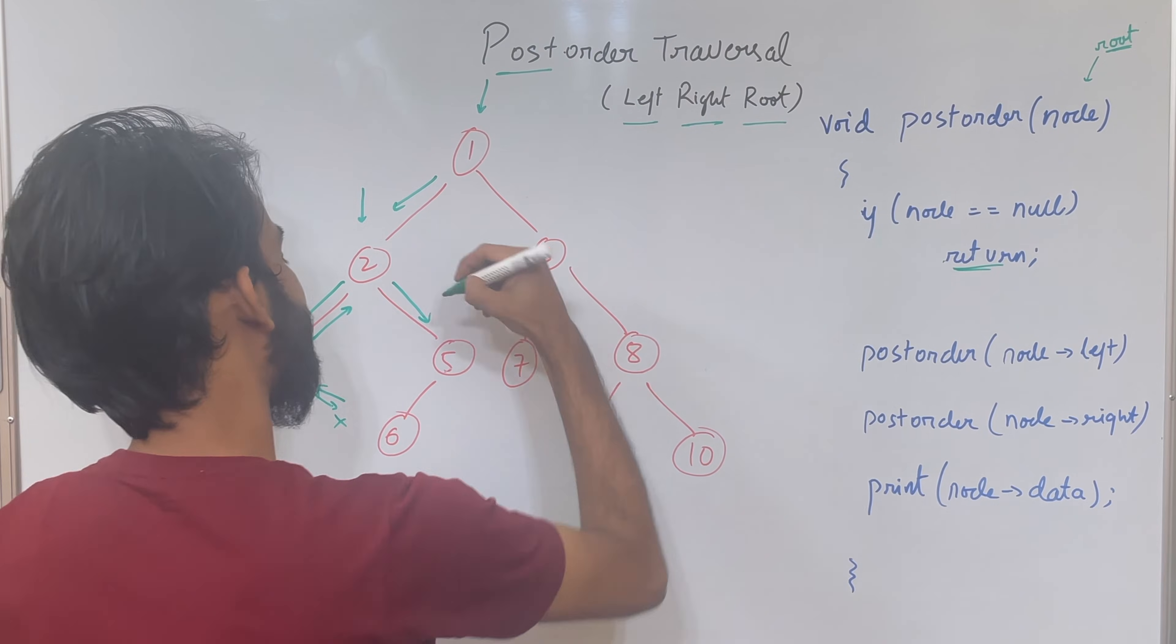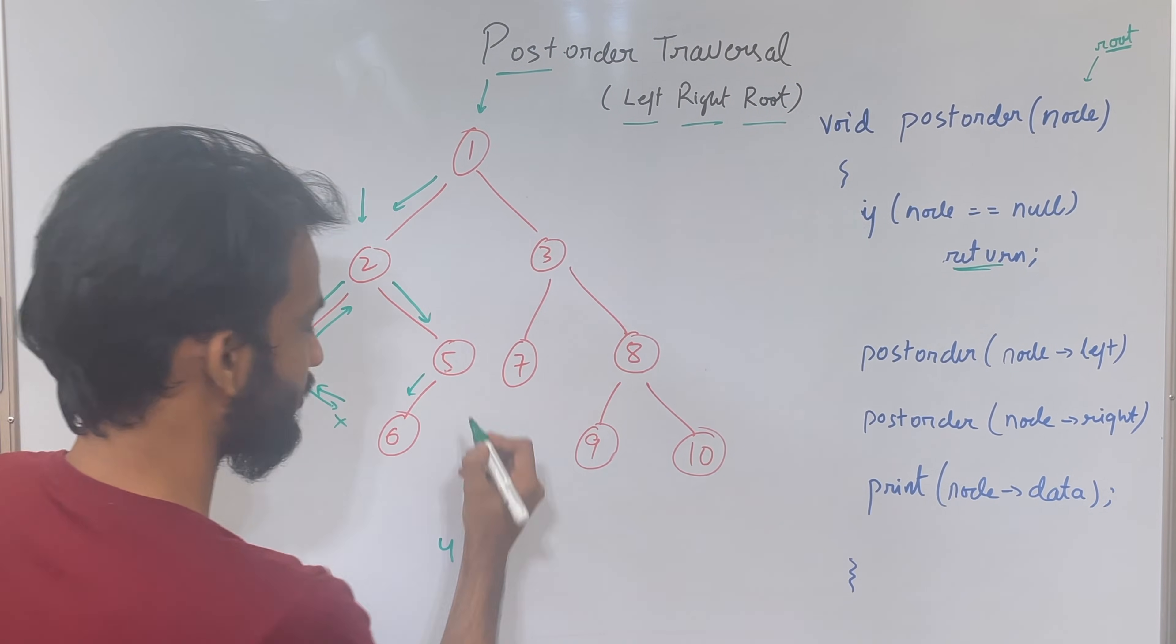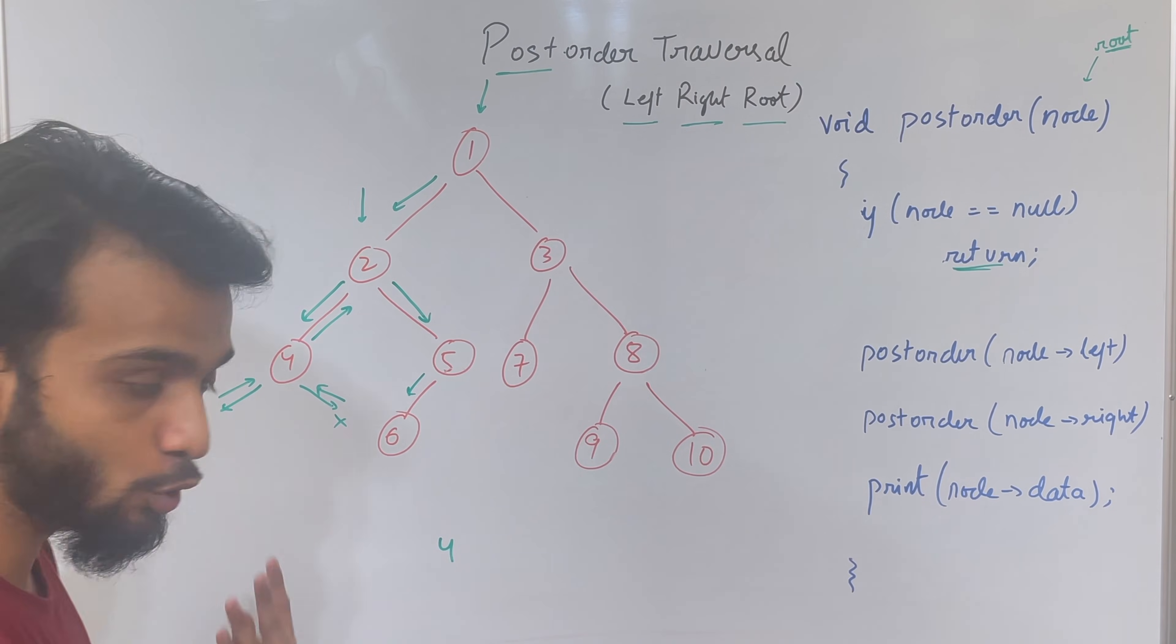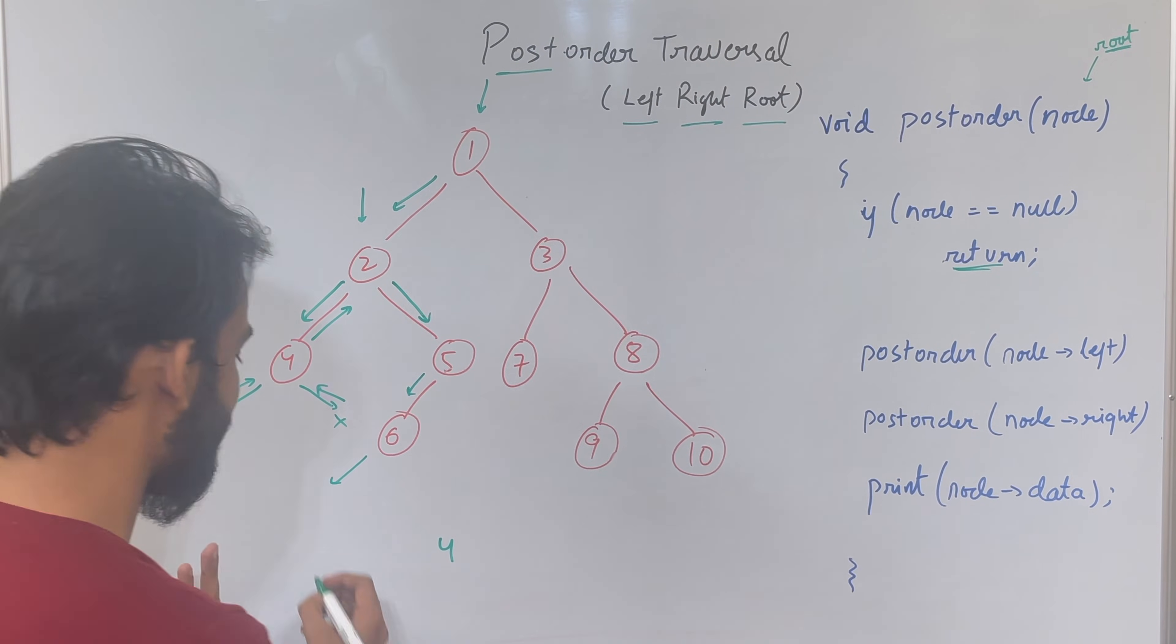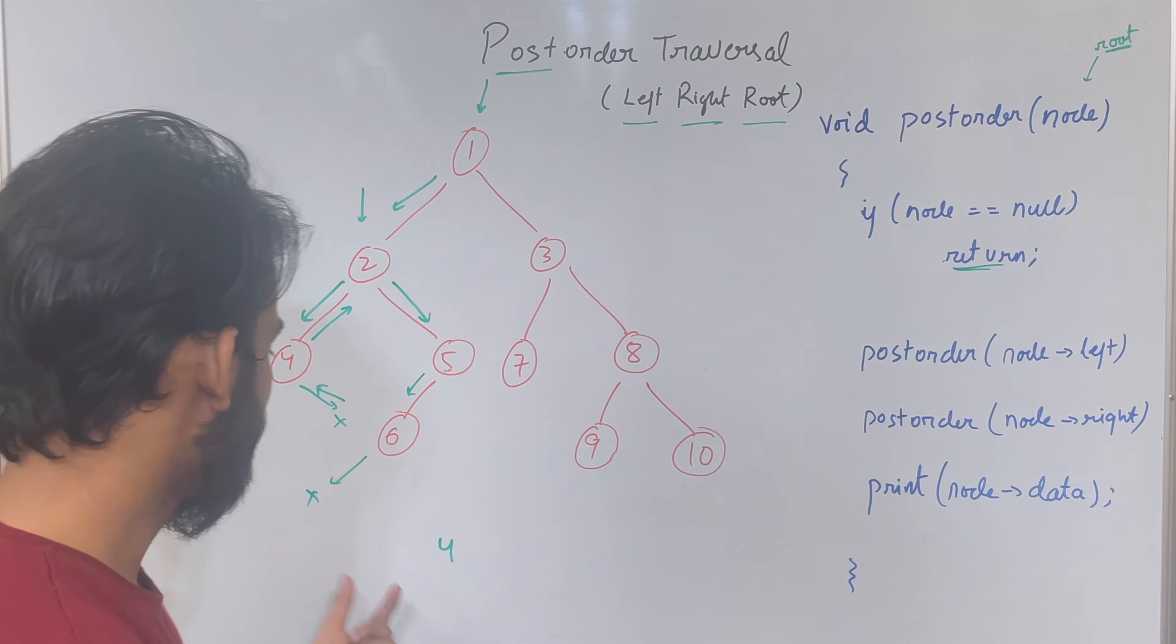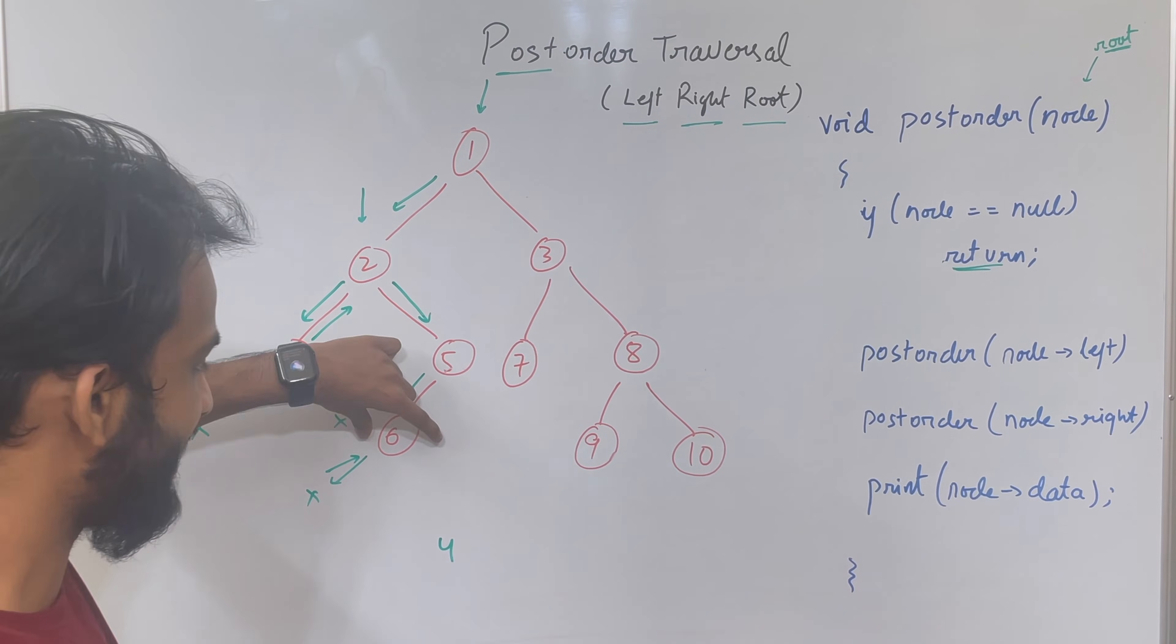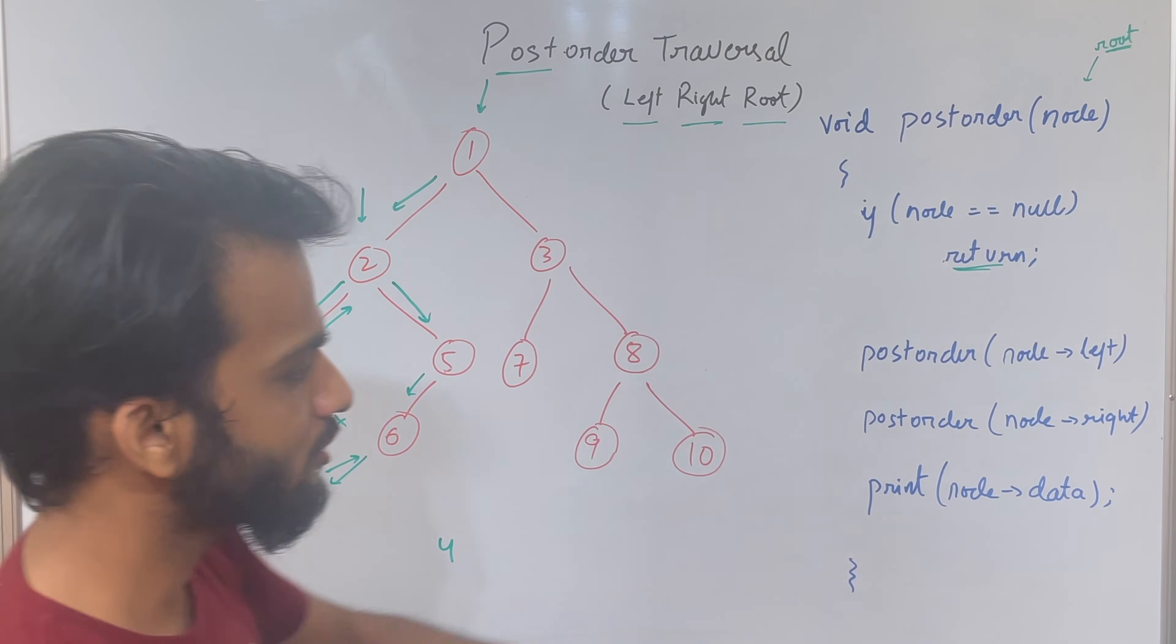So I'll come to my right. 5 says okay I have to go to the left, so I'll go. 6 says I have to go to my left, so I'll go. Now when 6 goes to the left it sees a null. Since it is seeing a null, what it will do is it will come back. 6 says I went to the left, I saw a null, so now it's time to go to the right.